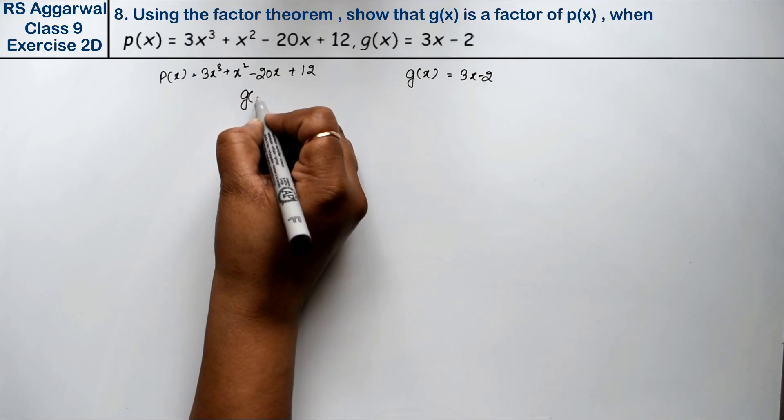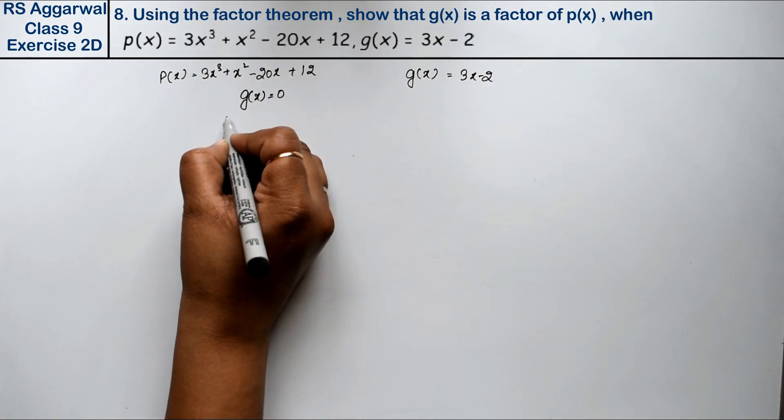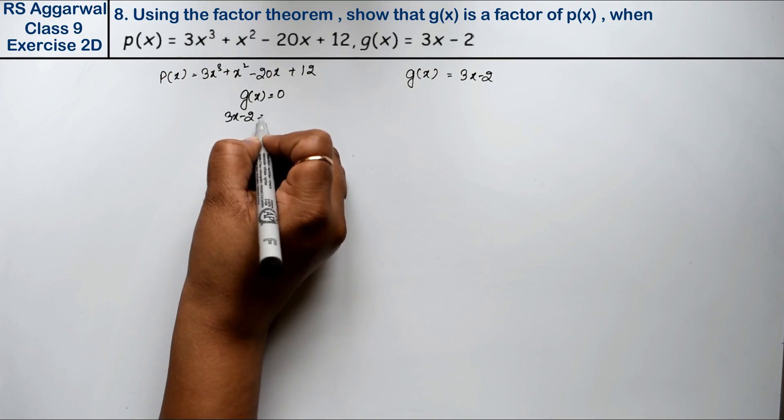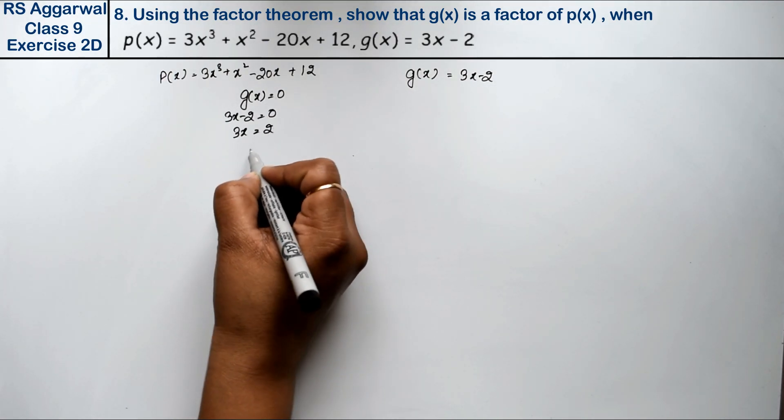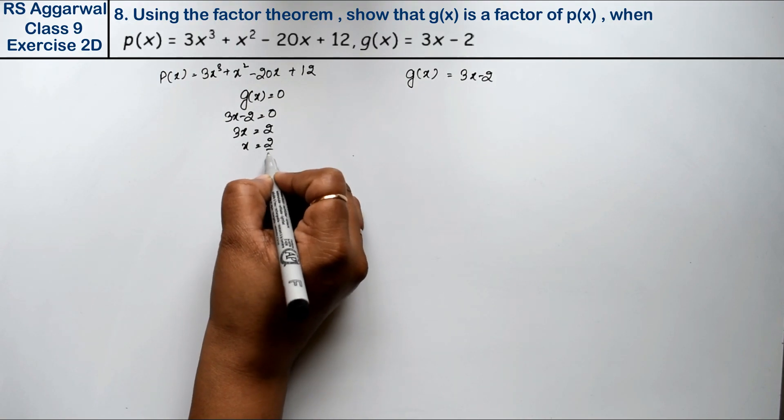So g(x) = 0. We have 3x - 2 = 0, which gives 3x = 2 and x = 2/3.